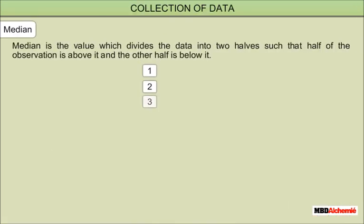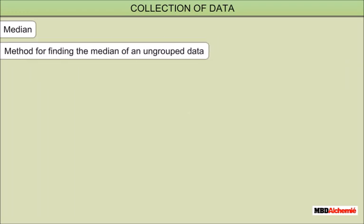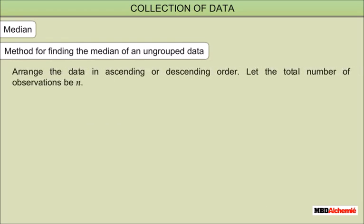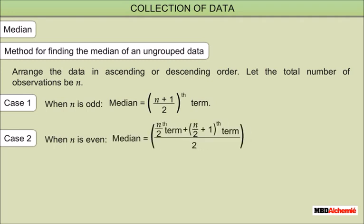Median: the median is the value which divides the data into two halves such that half of the observations are above it and the other half are below it. Method for finding the median of ungrouped data: arrange the data in ascending or descending order and let the total number of observations be n. Case 1 — when n is odd, median is the (n+1)/2th term. Case 2 — when n is even, median is the mean of the (n/2)th term and the (n/2 + 1)th term.